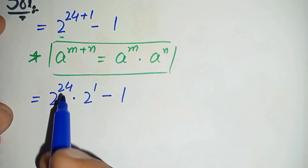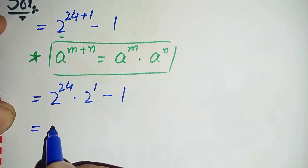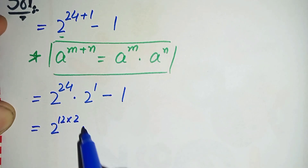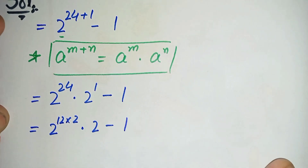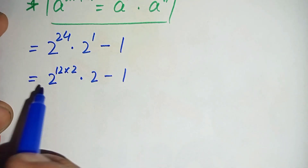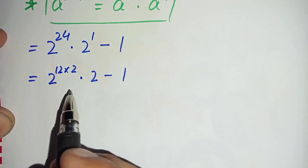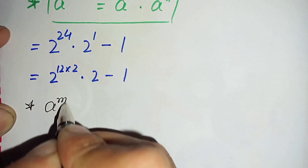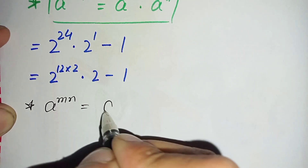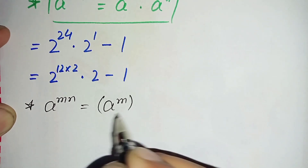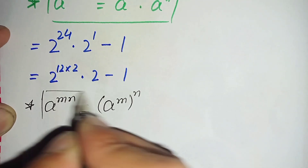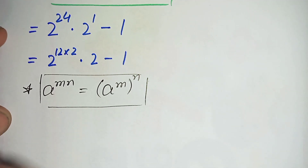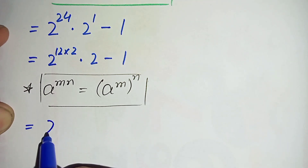Now we will factorize the power 24 as the product 12 times 2. So we can write it as 2 raised to power 12 times 2, times 2 raised to power 1, minus 1. Here we use the exponential property: a raised to power m times n can also be written as a raised to power m, whole raised to power n. By using this property, we move the power 2 outside, so this becomes 2 raised to power 12, whole squared, times 2, minus 1.